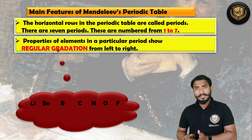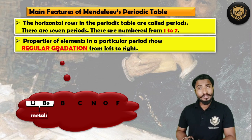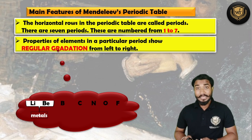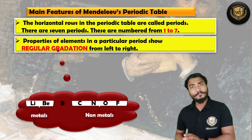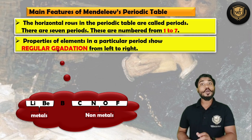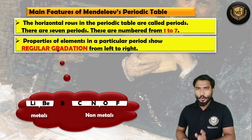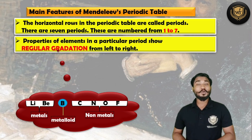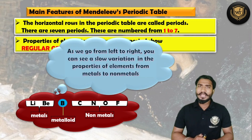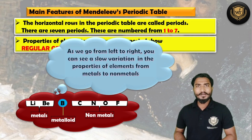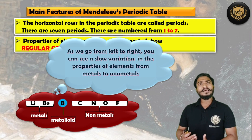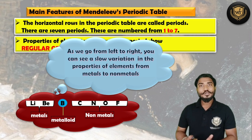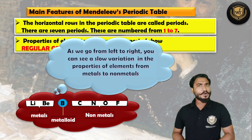Lithium and Beryllium are both metals. Carbon, Nitrogen, Oxygen, and Fluorine are all non-metals, whereas Boron is a metalloid. So when you move from left to right in a period, the properties of elements were showing a gradation — they were upgrading from metals to non-metals. That was about a period.